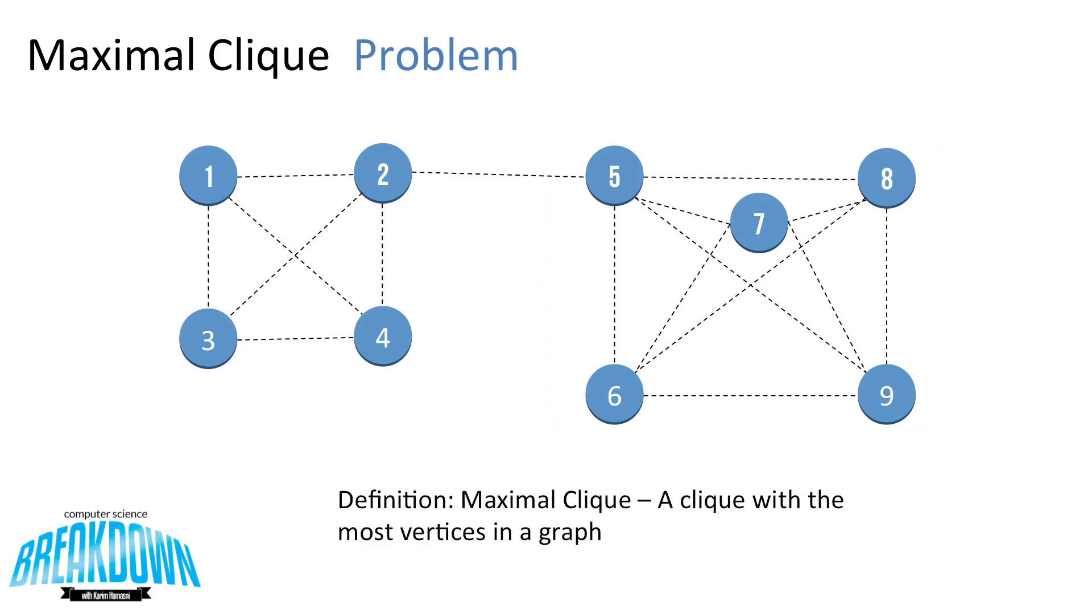Now let's define what a maximal clique is. It's a clique with the most vertices in its sub-graph. So in this case, if we were to look at the vertices 1 to 9,